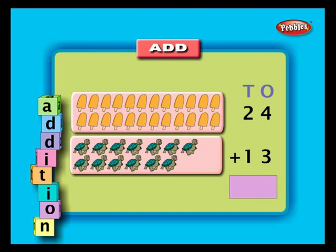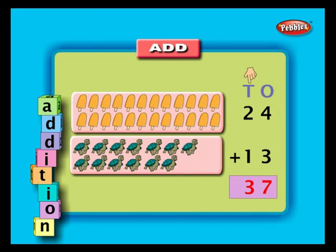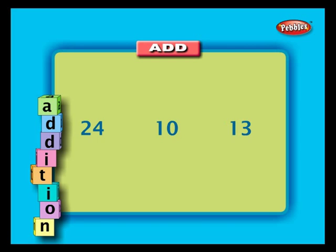Let us see another example. Let us add 24 ice creams and 13 turtles. Arrange them in a column. Add ones first — four plus three is seven. Write seven below the ones column. Now add the tens column — two plus one is three. Write three below the tens column. So the answer is 24 plus 13 which is equal to 37.